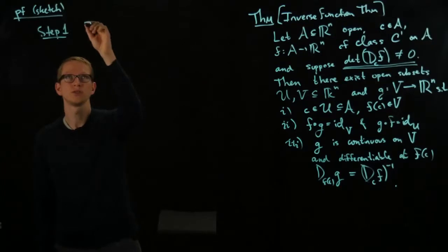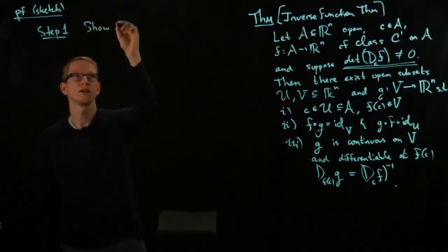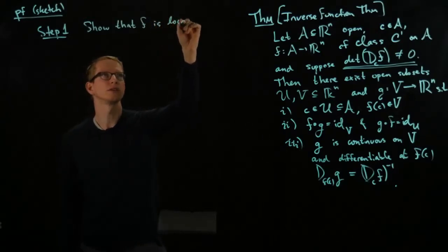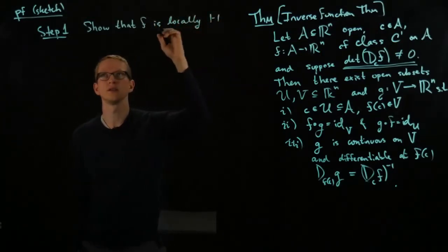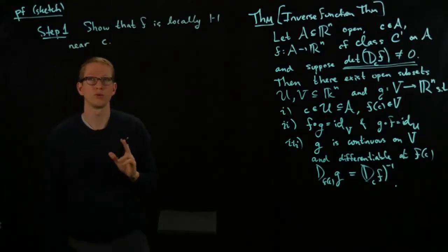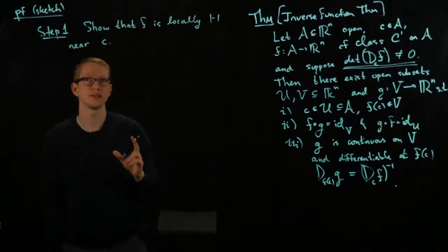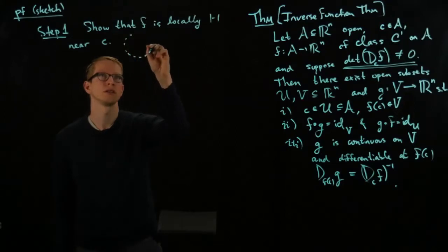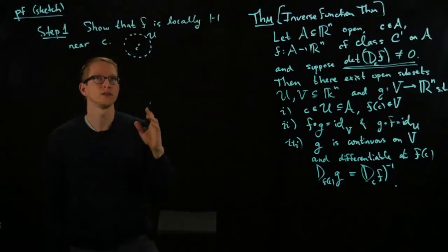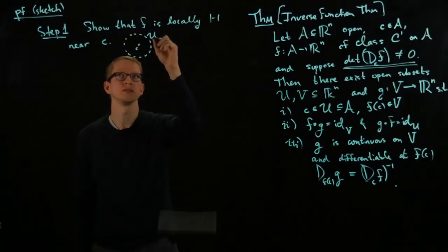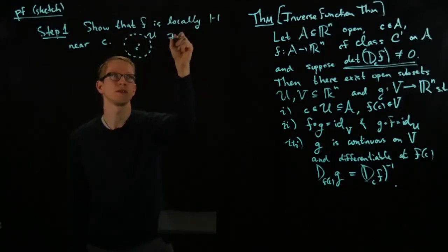So the first step is show that F is locally one to one near C. What do I mean by this? What I mean by this is that there exists some open set around C. Let's call it U. Such that when I restrict F to this domain,